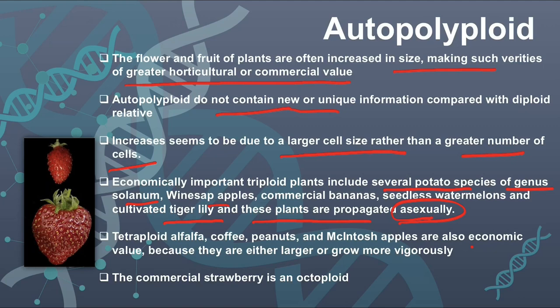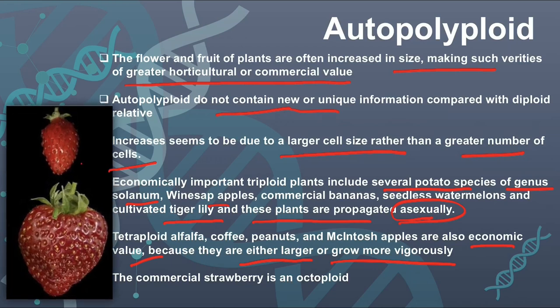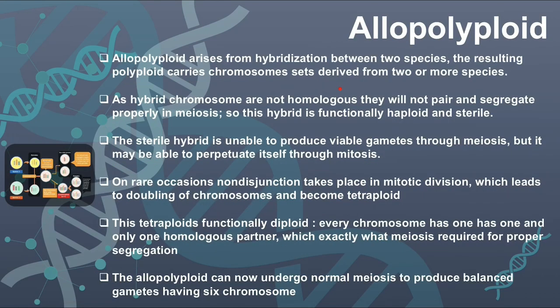Tetraploid examples include alfalfa, coffee, peanuts, and McIntosh apples — they are either larger or grow more vigorously, making them commercially beneficial. For example, the octaploid strawberry is much larger in size compared to the normal wild diploid variety, which makes it commercially very beneficial.